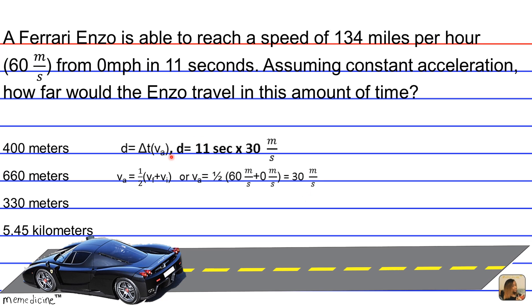Using our initial formula, we plug in our knowns. We're still trying to figure out the displacement, but we know that it occurs in 11 seconds, and we just figured out that our average velocity is 30 meters per second.